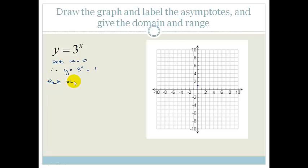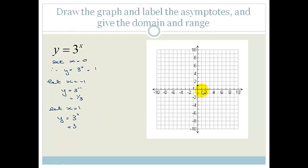Now let x equal minus 1: y equals 3 to the negative 1, which is a third. And if we let x equal 1, we get y equals 3 to the 1, which is just 3. So when x is 1, y is 3. Therefore we have this exponential curve that is not quite touching the x-axis, and it goes all the way from negative infinity to positive infinity for the x values.